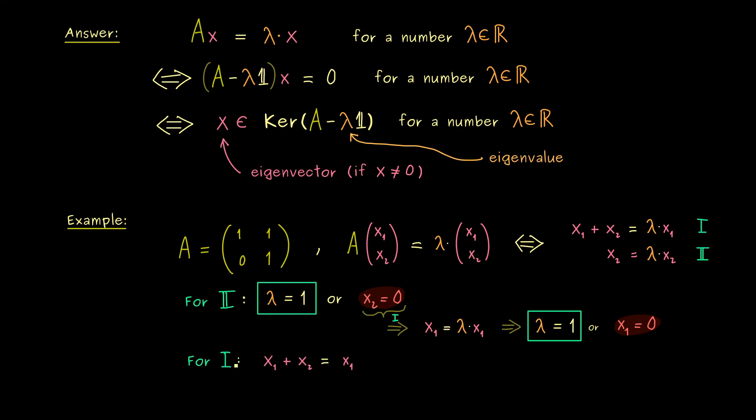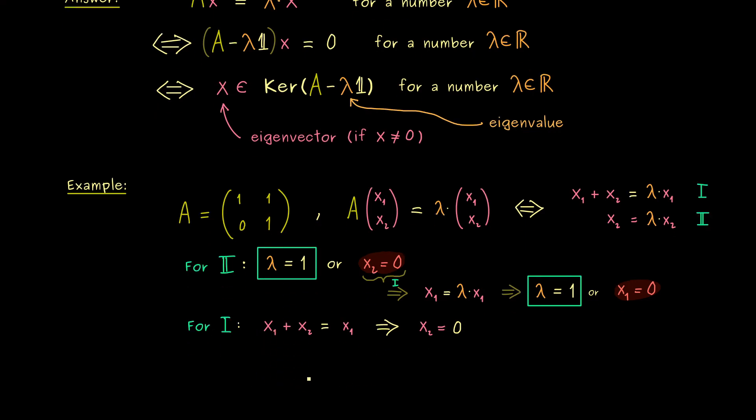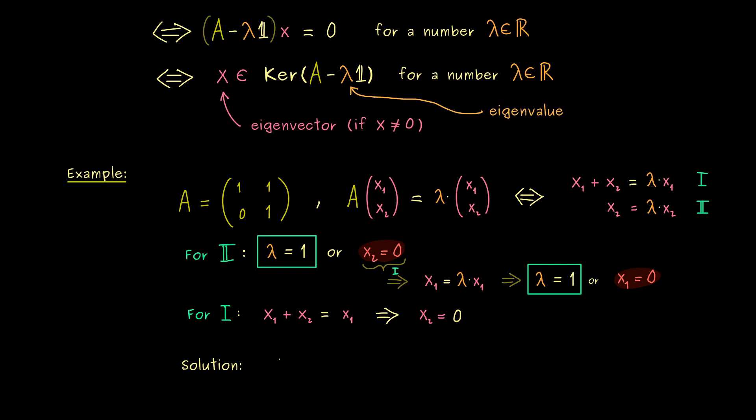Namely, the first equation now reads x₁ plus x₂ is equal to x₁, which means x₂ has to be equal to 0. However, it also implies that x₁ can be chosen as we want. So you see, no matter how we choose x₁, this equation here is always satisfied. And with that, we can write down our whole solution of this eigenvalue equation.